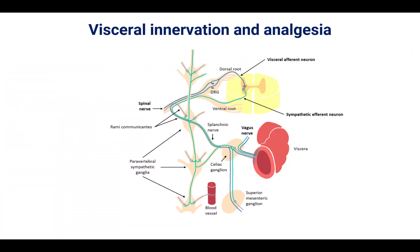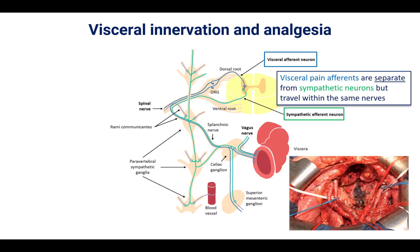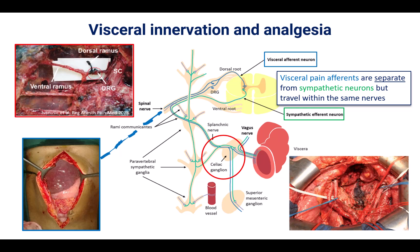To block visceral pain, we must understand the pathway of transmission. The sensory afferent fibers from internal viscera travel on the same nerves as sympathetic efferents, which is why autonomic plexi such as the celiac plexus are targets for sympathetic blocks in conditions like cancer pain. We can also block the visceral sensory afferents where they converge with the somatic afferent fibers that transmit sensation from the abdominal wall, carried in the intercostal nerves. This convergence occurs in the dorsal root ganglion and the spinal nerve root.